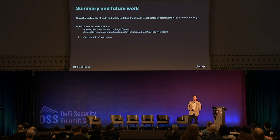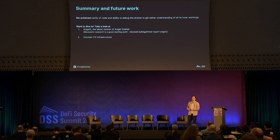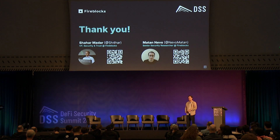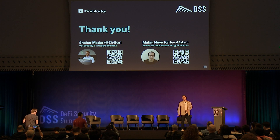Summary and future work: we achieved executability and readability of the code as we wanted. If you want to dive in, I recommend looking at Angel X, which is the latest version of the Angel Drainer — a good starting point is Blockhead's research on their blog. Also worth exploring is the on-chain command-and-control mechanism that Angel uses, which leverages smart contract storage in a really interesting way. Thank you for coming and listening — you can find us on Twitter and in person.